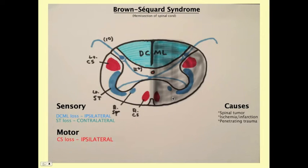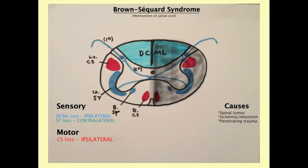Brown-Sequard syndrome is a hemisection of the spinal cord — think of it as cutting out half of your spinal cord. Like any spinal injury, it affects that level and everything below it. Knowing the anatomy is critical here. If you cut off half of the spinal cord, the DCML — a sensory tract — will result in loss of fine touch and proprioception ipsilaterally, because the DCML hasn't decussated yet at that point.